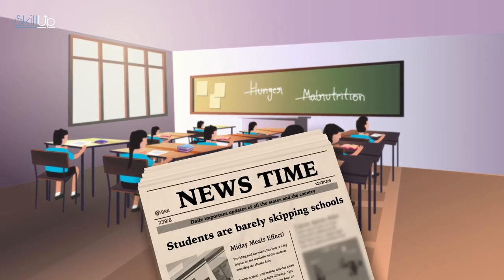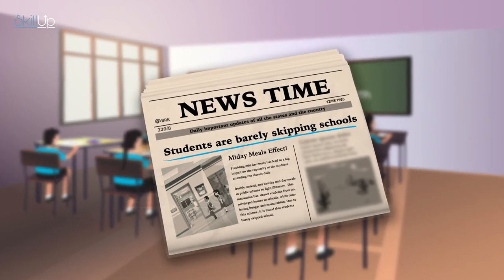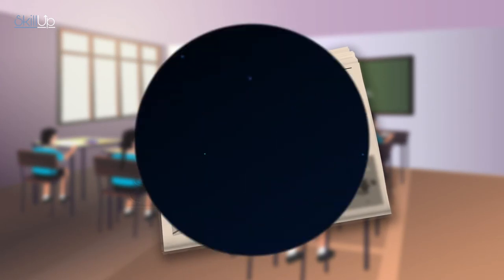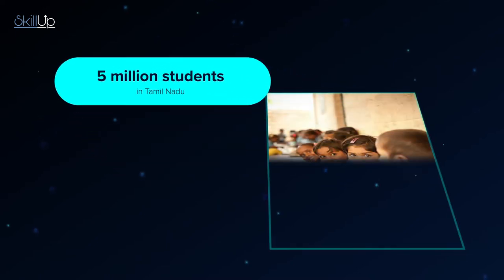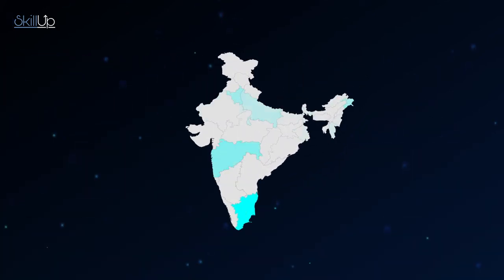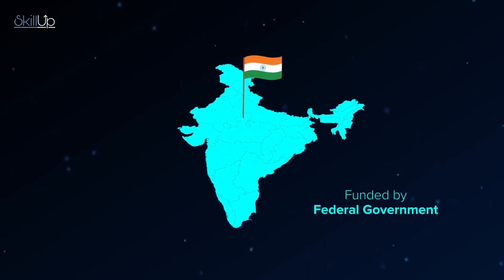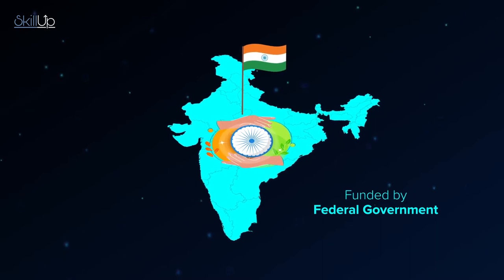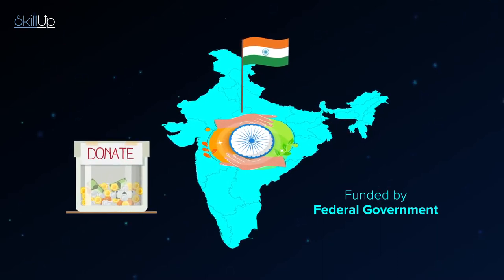When this scheme was started nearly seven decades ago, it was found that students barely skipped school anymore. Today, around five million students in Tamil Nadu are fed every day under this scheme. This model has been replicated across India and is funded by the federal government, though it needed the support of public donations to remain a success.